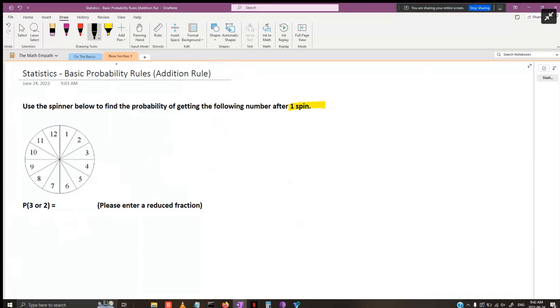The statement says to find the probability of getting a three or landing on a two. The keyword is 'or' and this is how I know that it's the addition rule we're going to apply.